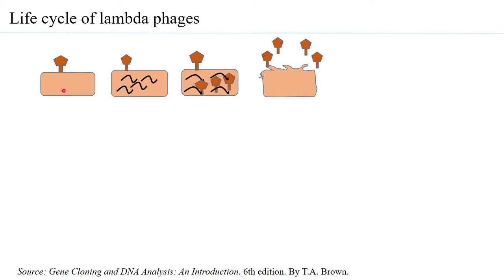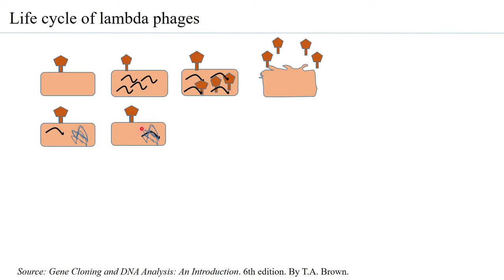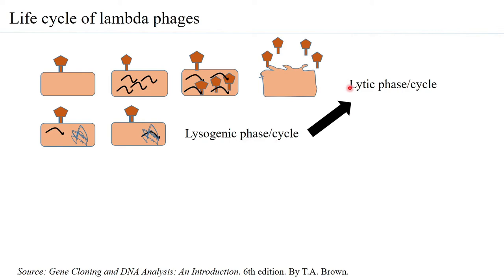Another part of the life cycle of lambda phages is that once the phage DNA gets into the host bacteria, there are chances that the DNA does not multiply but instead gets integrated within the genome of the bacteria. When it is integrated within the genome of the bacteria, that phage becomes dormant. It does not multiply and such a phage is known as a pro-phage. It remains integrated and dormant until there is a conducive environment for it to return to the lytic cycle. The lysogenic phase of the cycle can re-enter the lytic phase and start multiplying.